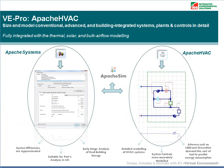For those of you who have been using our software, you will be familiar with Apache Sim, our dynamic simulation engine which allows you to model your building heating and cooling loads, energy consumption and CO2 emissions, as well as occupancy comfort throughout the year.